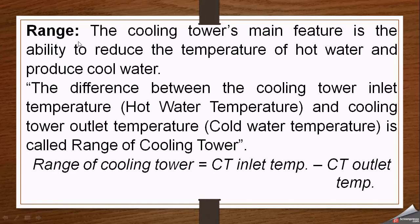Another important term is range. The cooling tower's main feature is the ability to reduce the temperature of hot water and produce cool water that can be recirculated back to the system to absorb heat and return to the cooling tower. The difference between the cooling tower inlet temperature — the hot water coming from the process — and the cooling tower outlet temperature — the cold water obtained after passing through the tower — is called the range. Range = cooling tower inlet temperature minus cooling tower outlet temperature.